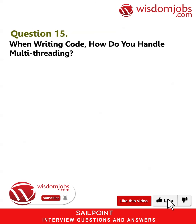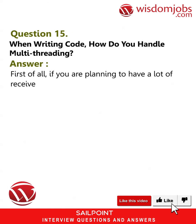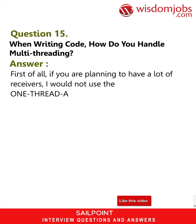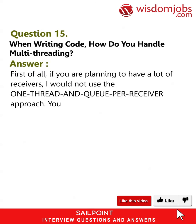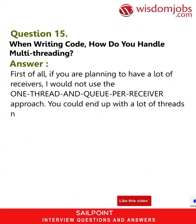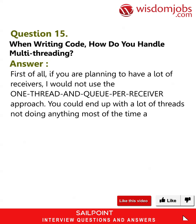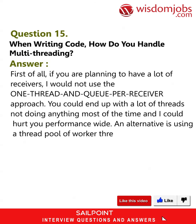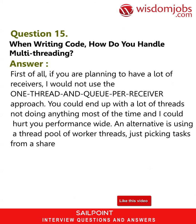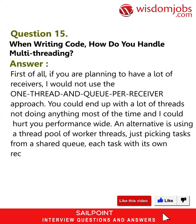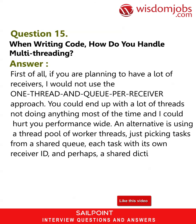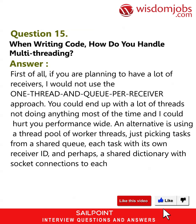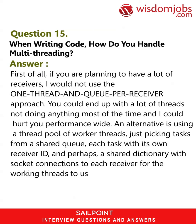Question 15: When writing code, how do you handle multi-threading? If you are planning to have a lot of receivers, avoid the one-thread-and-queue-per-receiver approach, as you could end up with many threads doing nothing most of the time, which could hurt performance. An alternative is using a thread pool of worker threads picking tasks from a shared queue, each task with its own receiver ID and perhaps a shared dictionary with socket connections to each receiver for the worker threads to use.